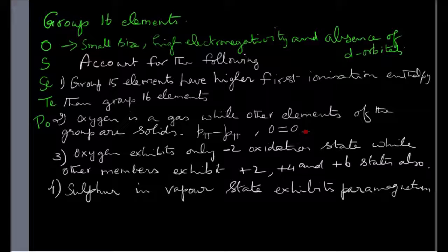The last one in this set is sulfur in vapor state exhibits paramagnetism. Sulfur in vapor state exists partly as S2.